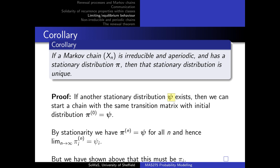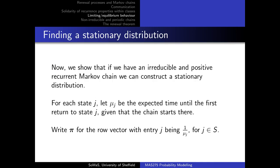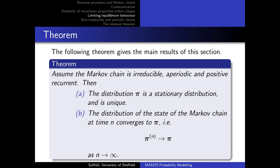We still don't quite know when a stationary distribution exists. It turns out that if you assume the chain is positive recurrent, you can construct it. For any j, let μ_j be the mean return time — the expected time until you return to j starting from j. Then define π_j = 1/μ_j. This row vector π will be the stationary distribution. Theorem 14: if X_n is irreducible, aperiodic, and positive recurrent, with π_i = 1/μ_i where μ_i is the mean return time to i, then π is the unique stationary distribution, and the distribution of X_n converges to π as n tends to infinity for any starting distribution.